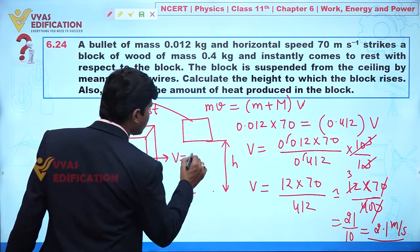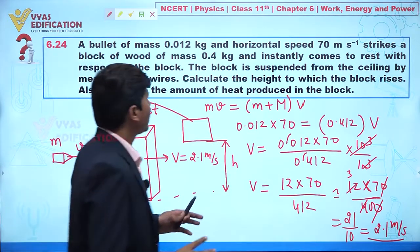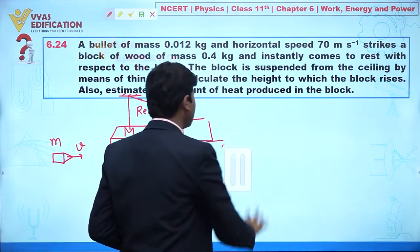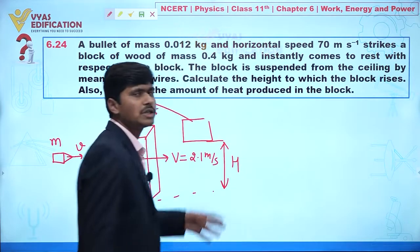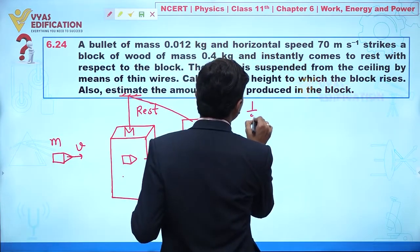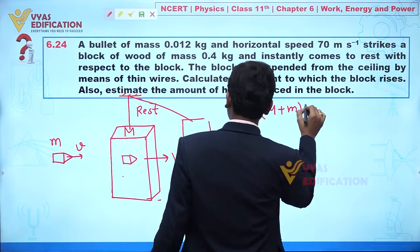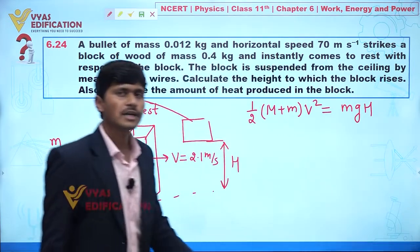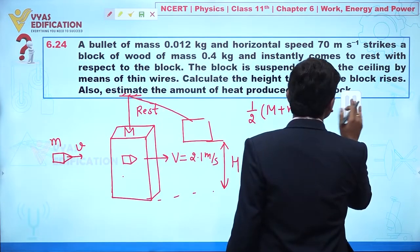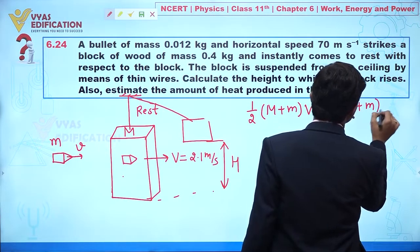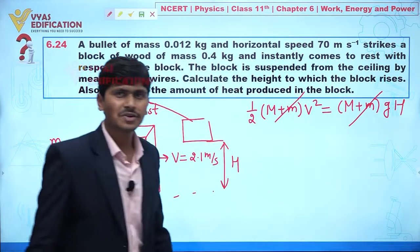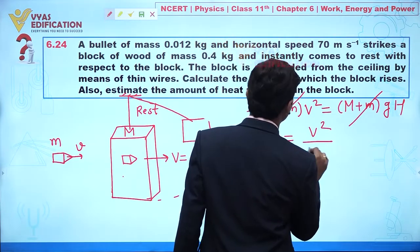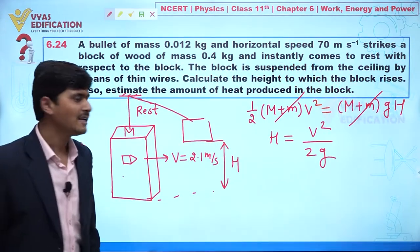Now we need to find the height to which the block will rise. Applying conservation of mechanical energy: the kinetic energy of the system converts into potential energy. We have (1/2)(M + m)v′² = (M + m)gH. The total mass cancels out, giving H = v′² / (2g).